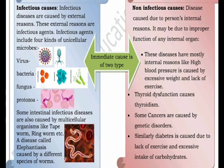Infectious diseases are caused by external reasons. These external reasons are infectious agents. Infectious agents include four kinds of unicellular microbes: virus, bacteria, fungus, and protozoa.